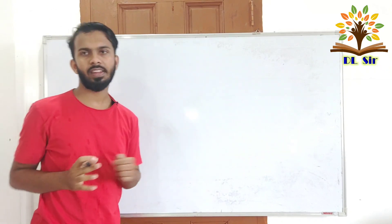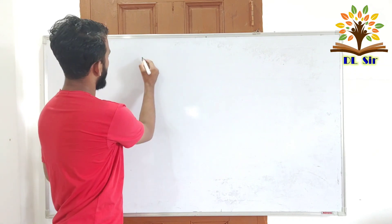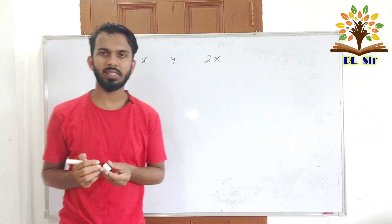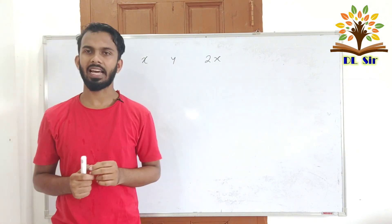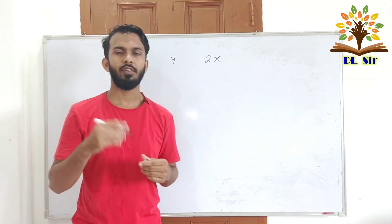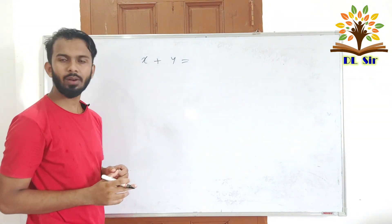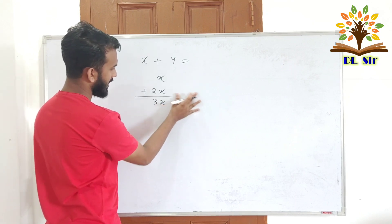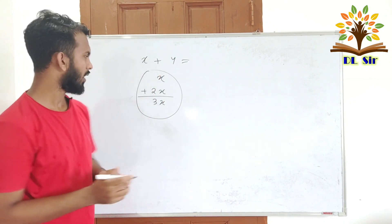For a simple algebraic equation, we write the sums directly. If we have to write an algebraic equation, we have to write the same variable together. For example, x plus x plus y equals our value. Because if we write x twice, x plus x, then we have to write it as 2x.